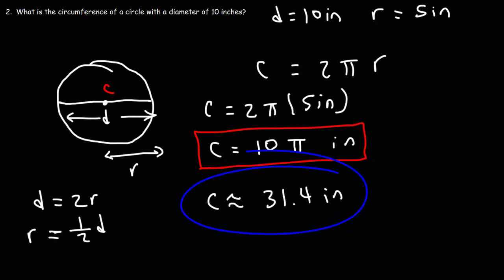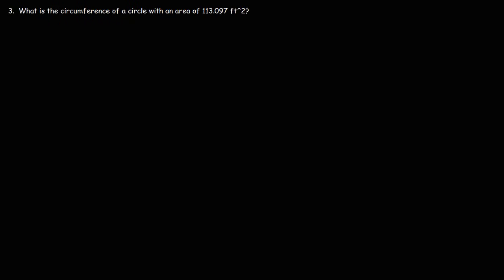So that's how you can calculate the circumference of a circle given the diameter — you just need to find the radius first, and then use this formula to get the answer. Now let's move on to the last question of this video: What is the circumference of a circle with an area of 113.097 square feet?